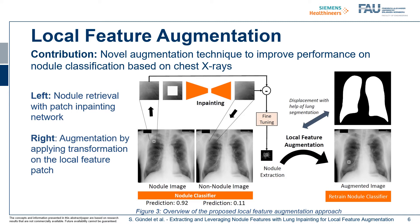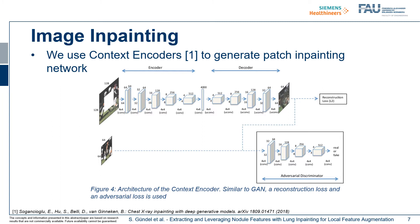For the image in-painting network, we use a common context encoder to generate realistic-looking patches. The input is a patch including a mask in the middle. We have an encoder and a decoder, which leads to the output prediction. Two different losses will be used to train this network: first, the reconstruction loss, and second, the adversarial loss with an additional discriminator network.